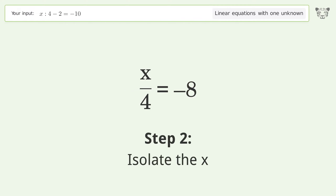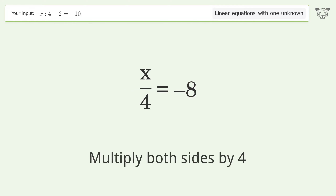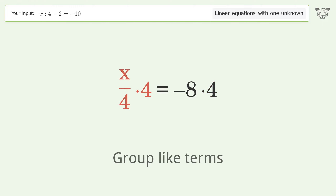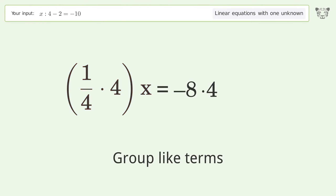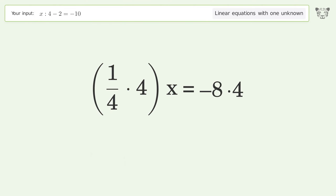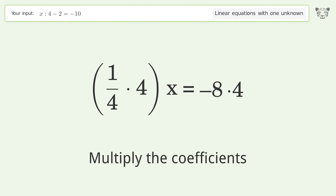Isolate the x. Multiply both sides by 4. Group like terms. Multiply the coefficients.